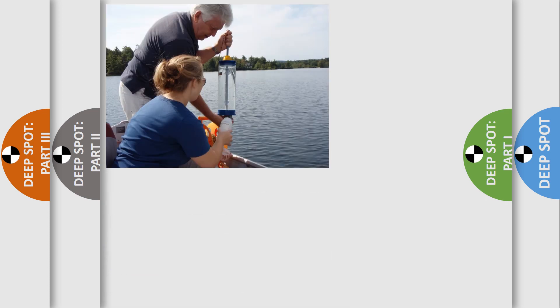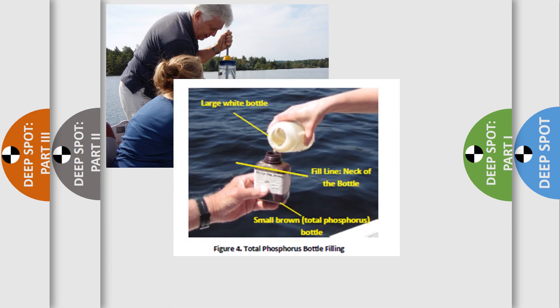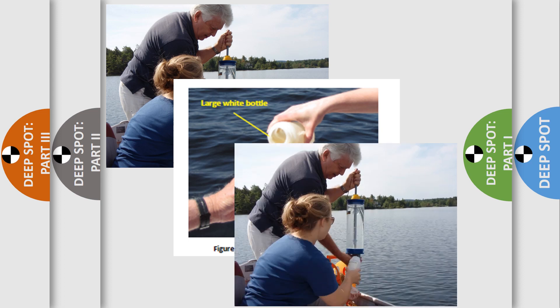Take your large white bottle and fill it with a small amount of water. Rinse the bottle and discard the water, then fill the white bottle up. Next, pour water from the white bottle into the small brown bottle. Do not rinse this bottle — it contains a small amount of acid as a preservative. Watch carefully as you fill and only fill the brown bottle to the shoulder. Finally, top off your white bottle with water before you dump the Kemmerer bottle.